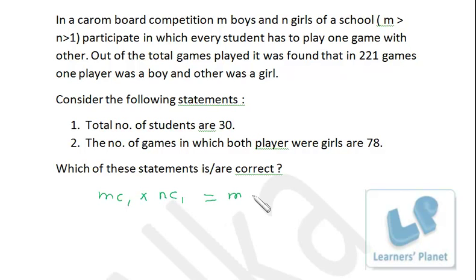So in all, M into N games will be there. And this M into N is nothing but 221. Out of M boys, we are selecting one boy. Out of N girls, we are selecting one girl. So we will be getting total M into N combination which is given to us as 221.